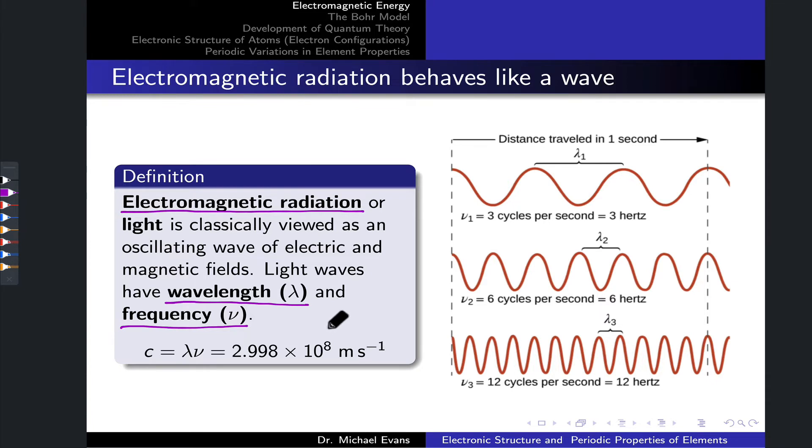Wavelength is a measure of the length of the wave from crest to crest or trough to trough. Frequency is a measure of the number of oscillations that the wave engages in per unit time—cycles per second, for example. When we multiply wavelength and frequency, we get a length times an inverse time, which is a velocity or speed. This constant c is the speed of light, equal to 2.998 times 10 to the eighth meters per second.